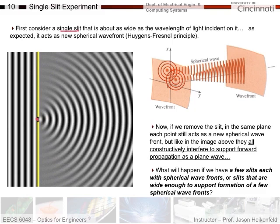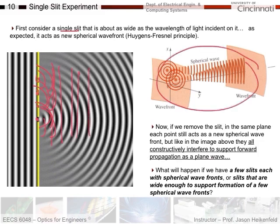Different photons propagate in all directions as you can see here. If we removed the slit, each point in that same plane would act as a new spherical wavefront, and through constructive interference they would all add up to support forward propagation as a plane wave. But with the slit blocking the rest of the re-radiators, we only have one and that perfect cancellation no longer holds. Let's see what happens when we increase the width of the slit a little bit to allow maybe a couple of re-radiators to exist.